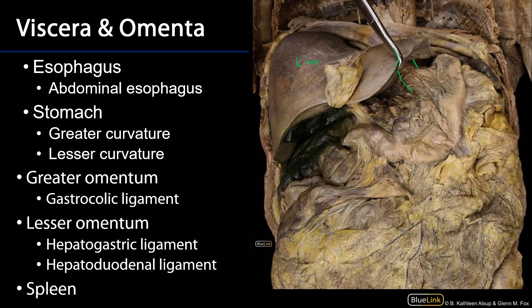The abdominal esophagus is leading itself into the stomach. The stomach has two very visible features here. The first is the greater curvature, which starts at the cardiac notch and we can follow that greater curvature all the way over to where the pyloric orifice would be. The lesser curvature starts at the esophagus, wraps around down this way, comes to a point — that's the angular incisure — and then goes over to the pyloric orifice.